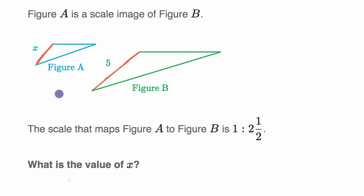One way to think about it is the ratio between X and five should be one to two and a half, because that's the scale that goes from figure A to figure B. So the ratio of X to five, this should be an equivalent ratio as one to two and a half. Let me make it a deeper blue, there you go.